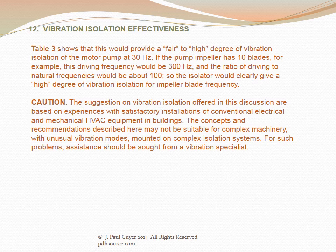An example: an 1800 RPM motor pump unit on steel springs with 1-inch static deflection has a driving frequency of 30 Hz and a natural frequency of 3 Hz, giving a frequency ratio of about 10 — providing fair to high vibration isolation at 30 Hz. If the pump impeller has 10 blades, the driving frequency is 300 Hz with a ratio of about 100, giving high isolation for blade frequency. Caution: these recommendations apply to conventional HVAC equipment; for complex machinery with unusual vibration modes, assistance from a vibration specialist should be sought.